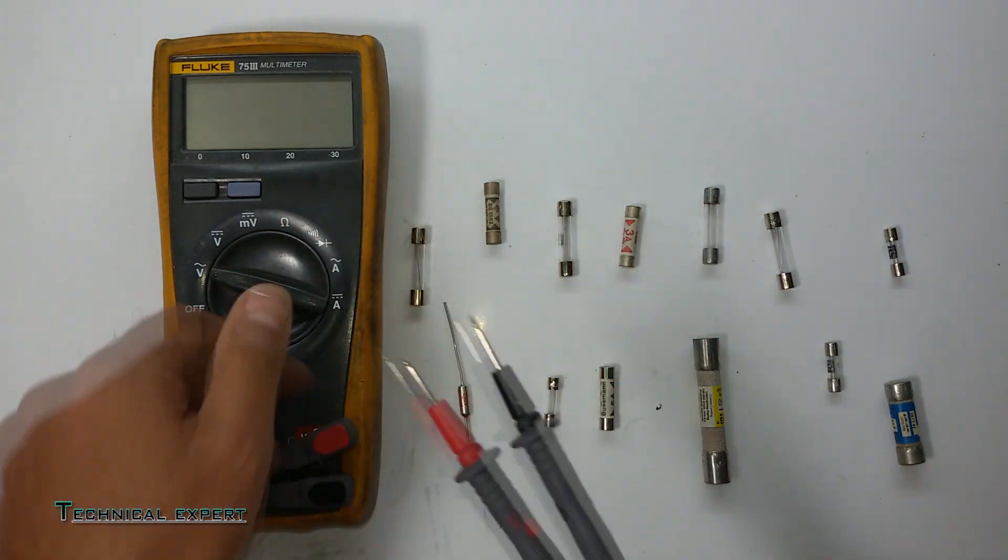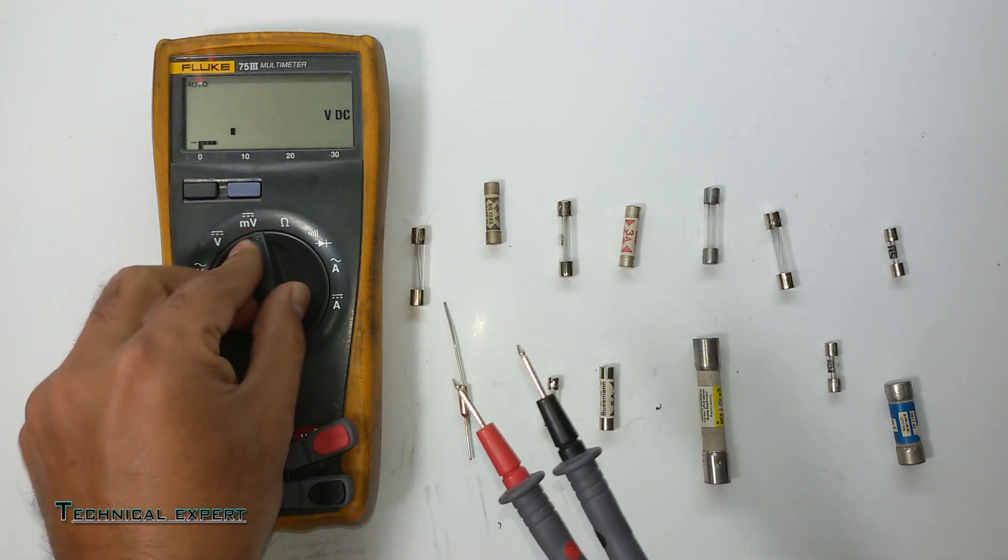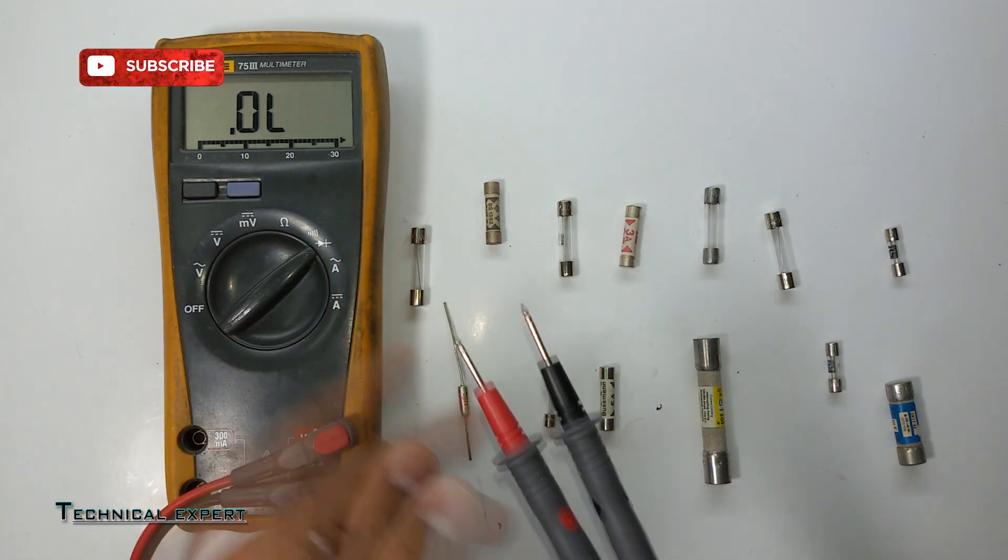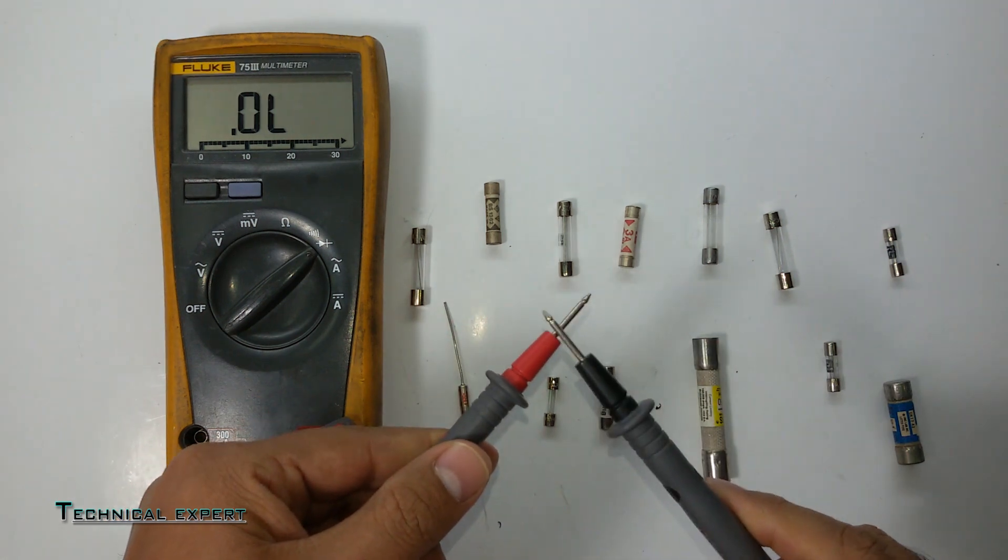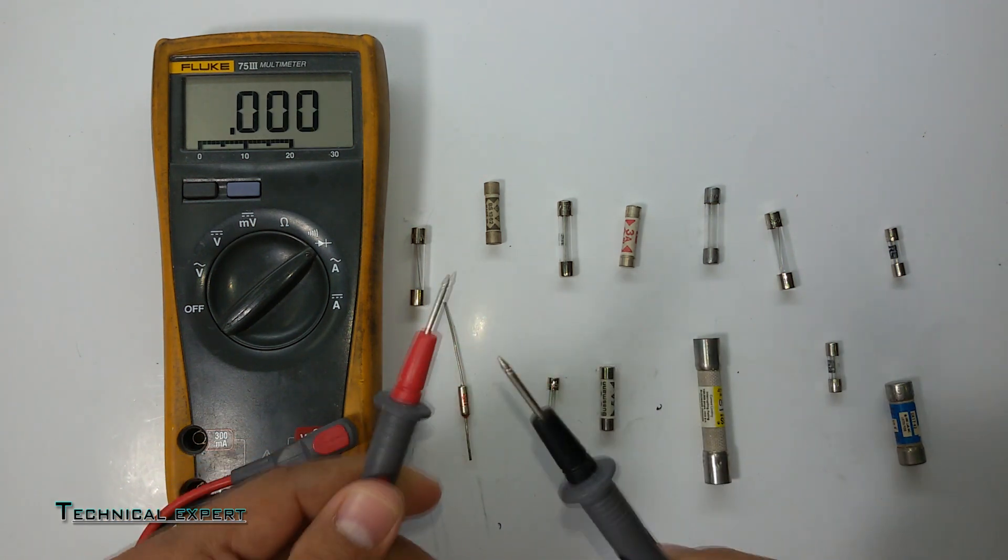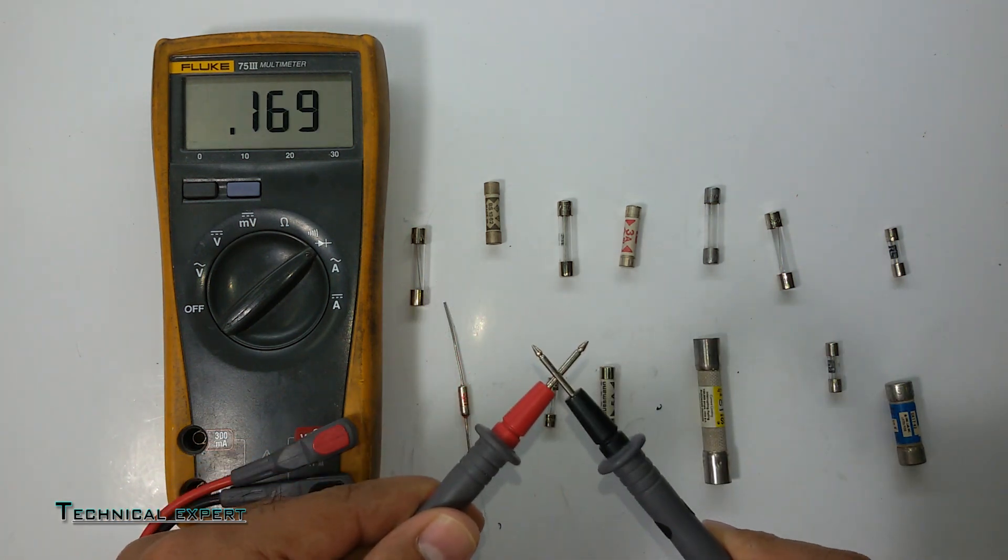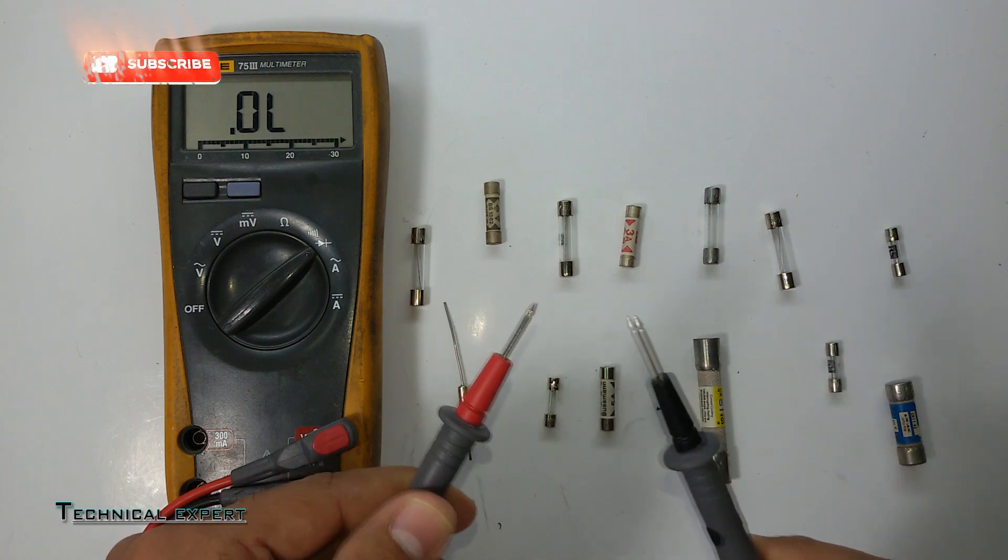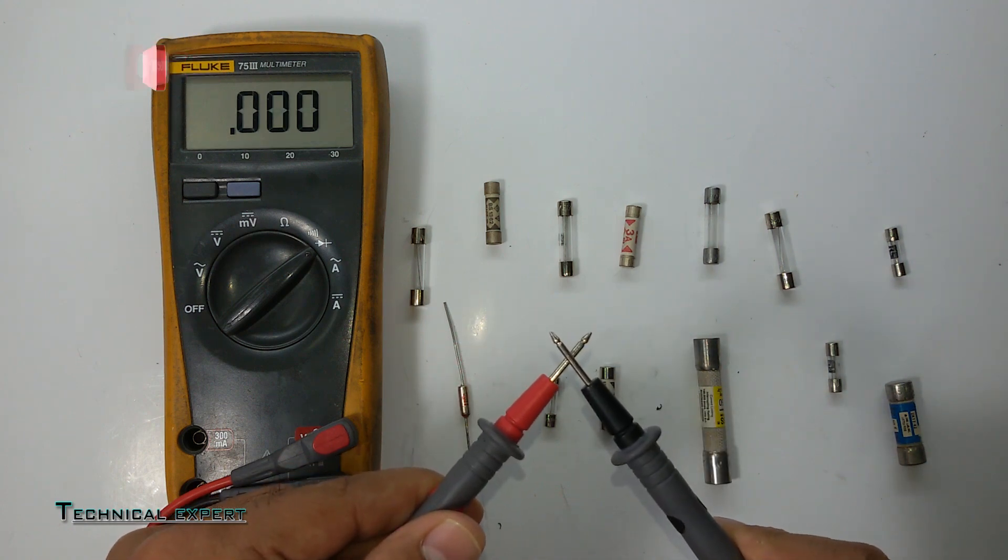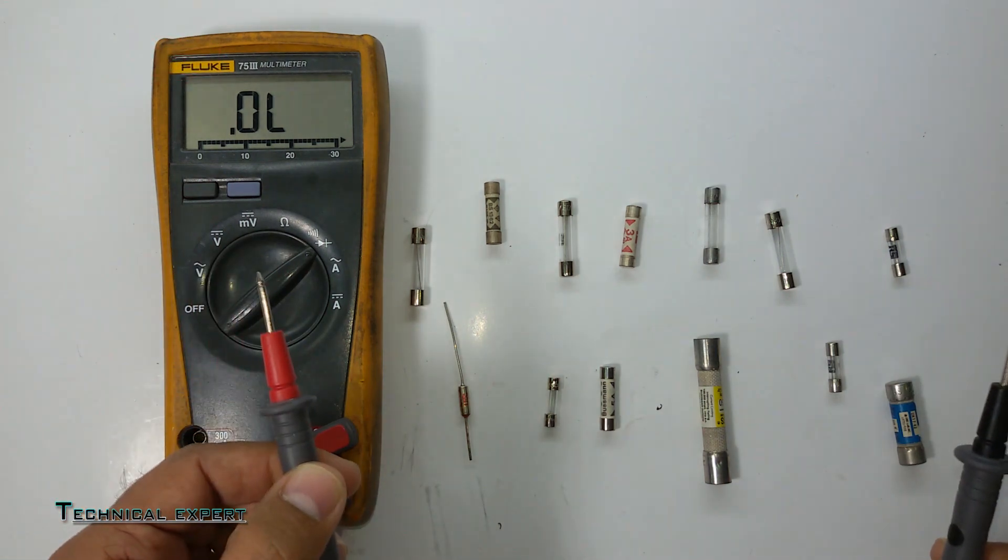On buzzer mode. As you can see, this one is buzzer, and you have to check your probe. It should conduct. This beep, this beep means your probes are conducting. So very simple way to check the fuse.